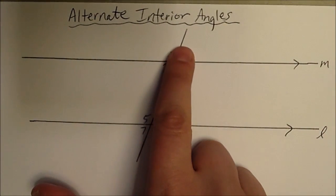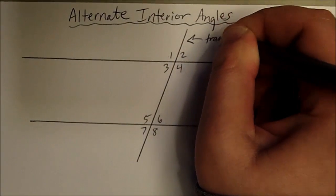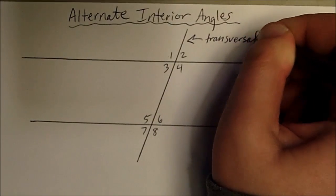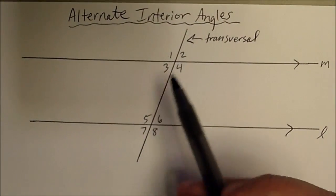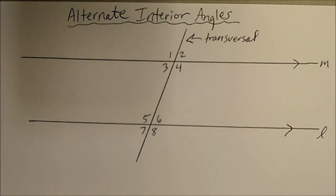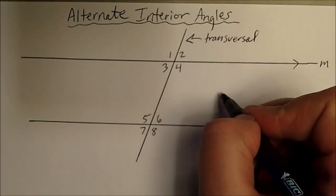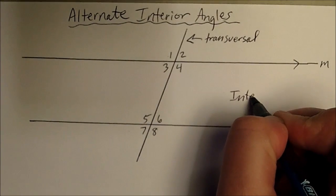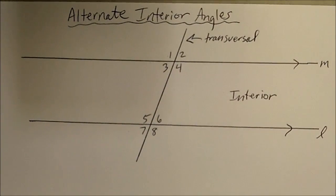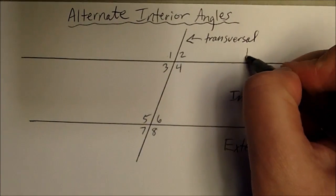The transversal cuts the parallel lines, which makes eight different angles. I have those angles labeled here. We're looking at alternate interior angles, so where is the interior? The interior is between the parallel lines, and the exterior is outside of the parallel lines.